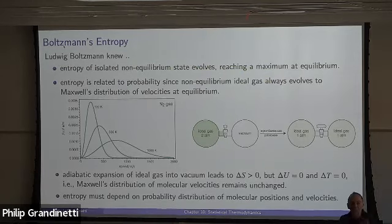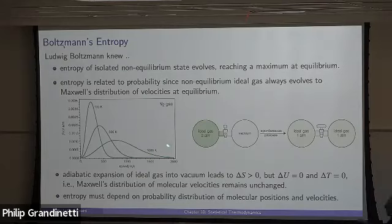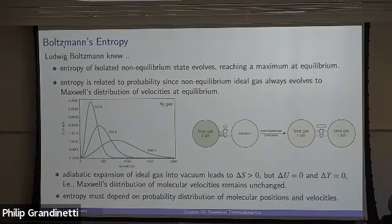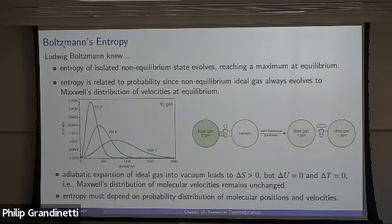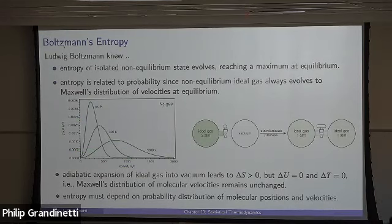He also knew that entropy was related to probabilities, because in chapter three, when we looked at Maxwell's distribution of speeds, that distribution was what you had at equilibrium. But if you started out with whatever distribution you could imagine — whether all the energy was in one particle, or all particles had exactly the same velocity — whatever non-equilibrium distribution you started with, over time with collisions, it always evolved into the Maxwell distribution of speeds.